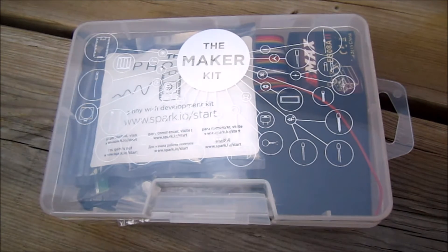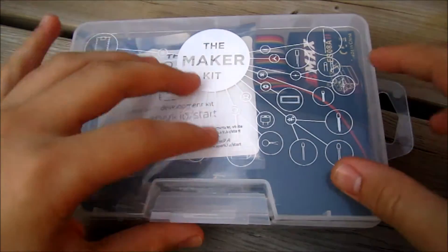Now the Maker Kit comes in at $90 US and the Photon by itself comes at $20 US. All the links for where you can buy it are down below in the description. So let's start unboxing this Photon.